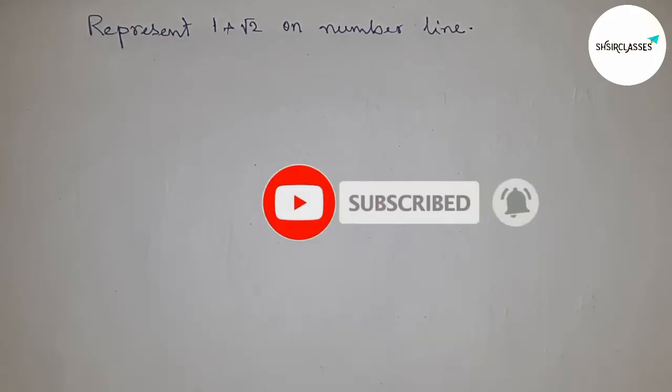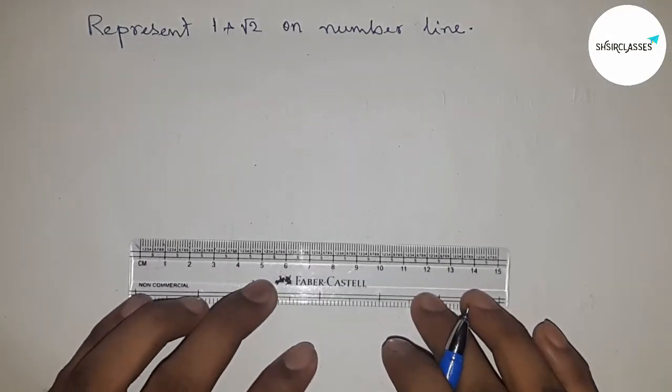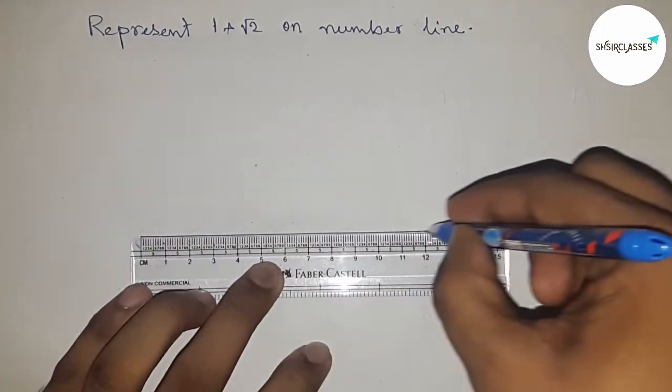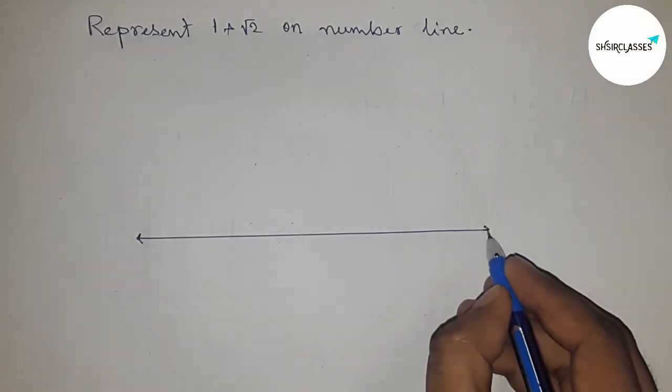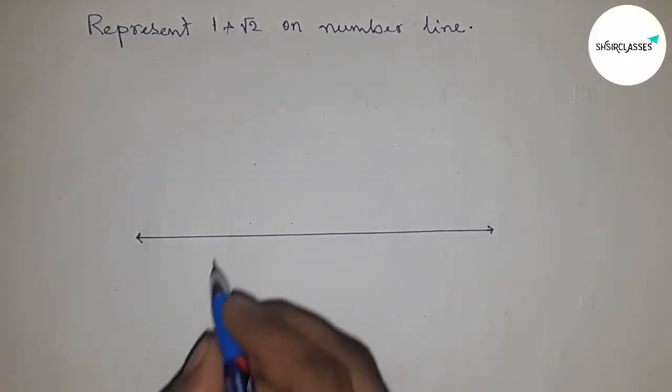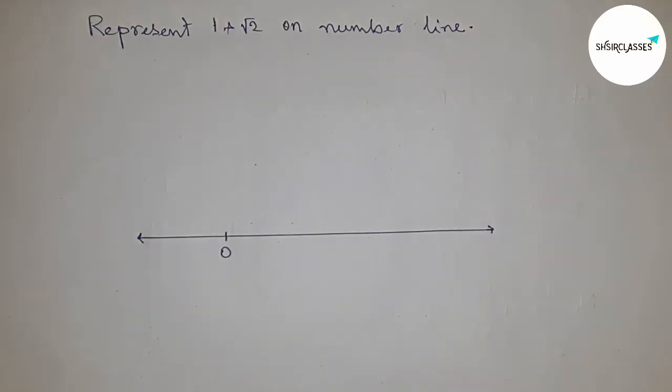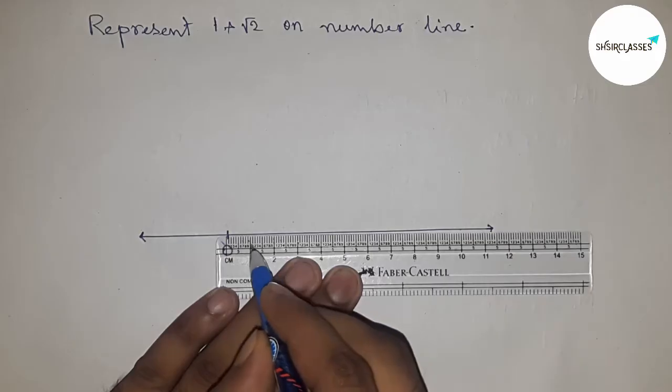First of all, draw a line of any length and mark the ends with arrows - this represents the number line. Next, mark the starting point as zero.